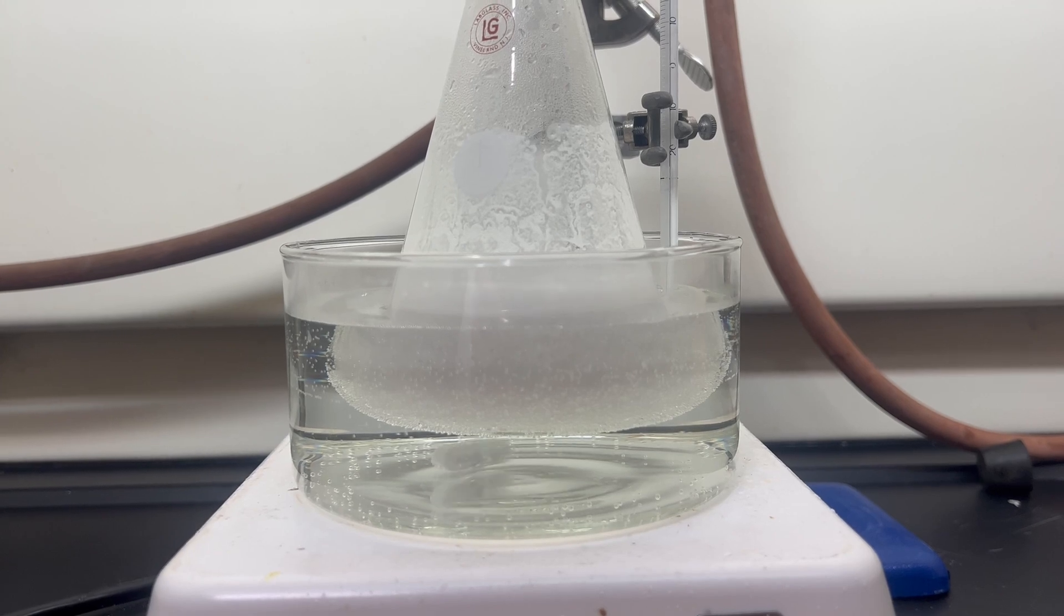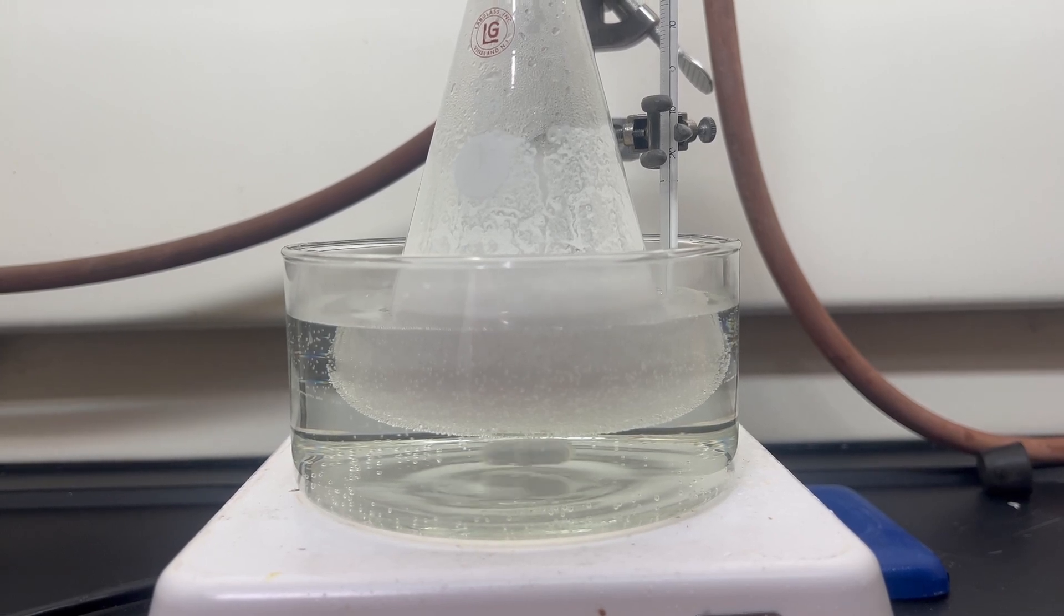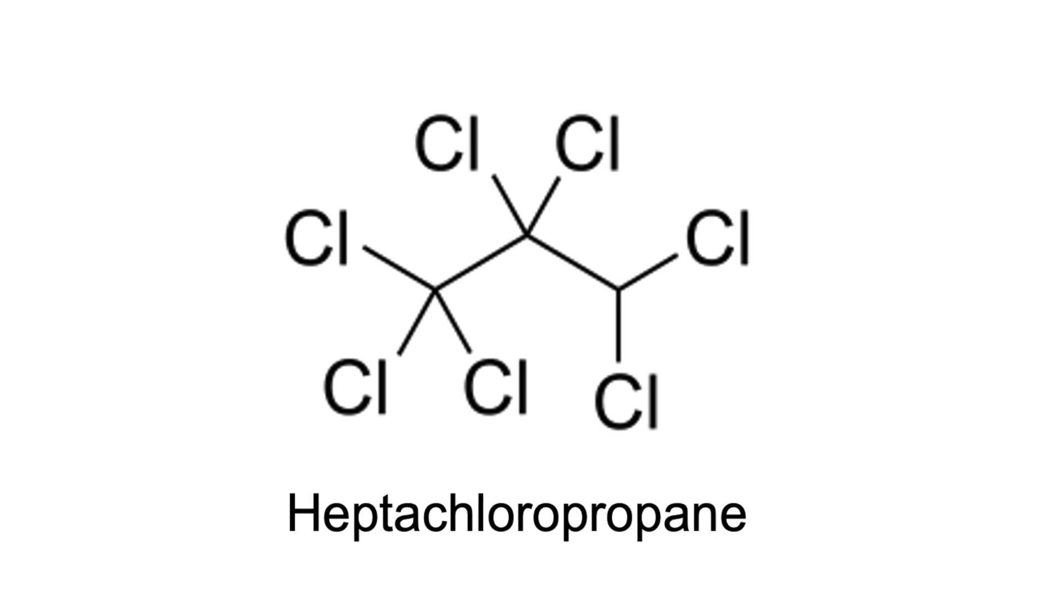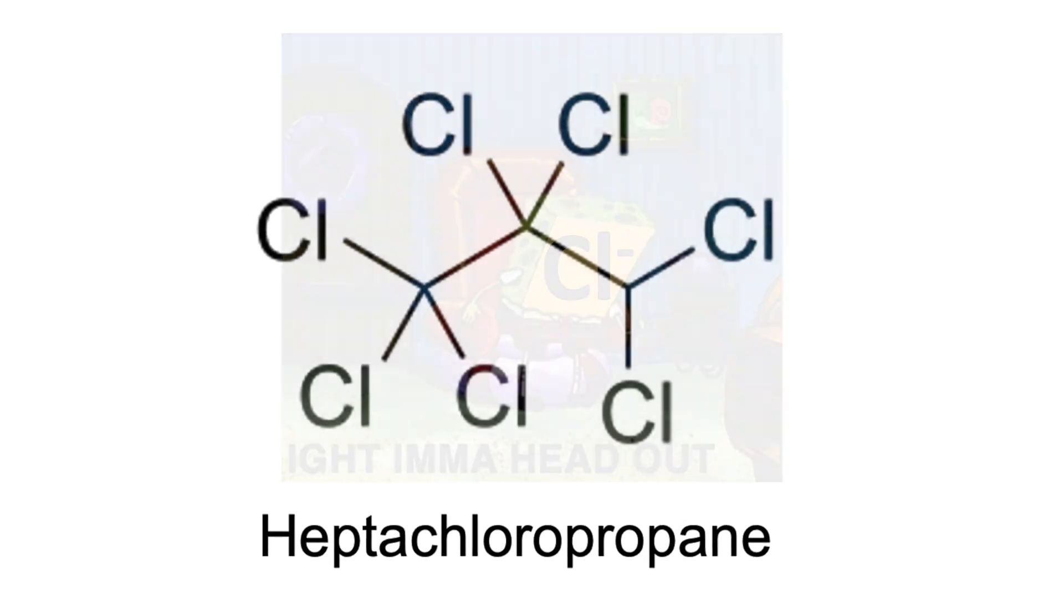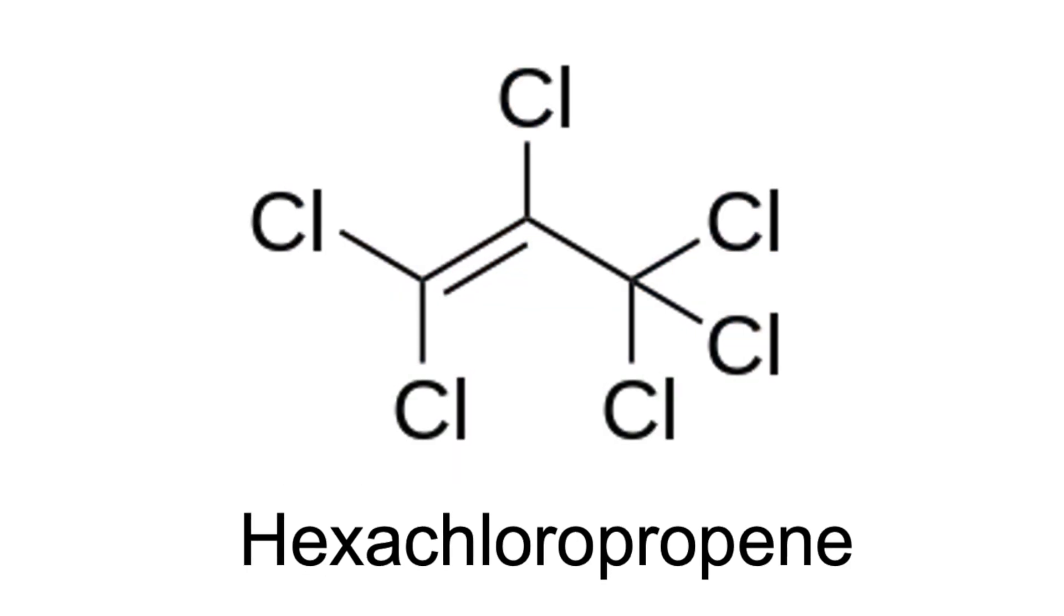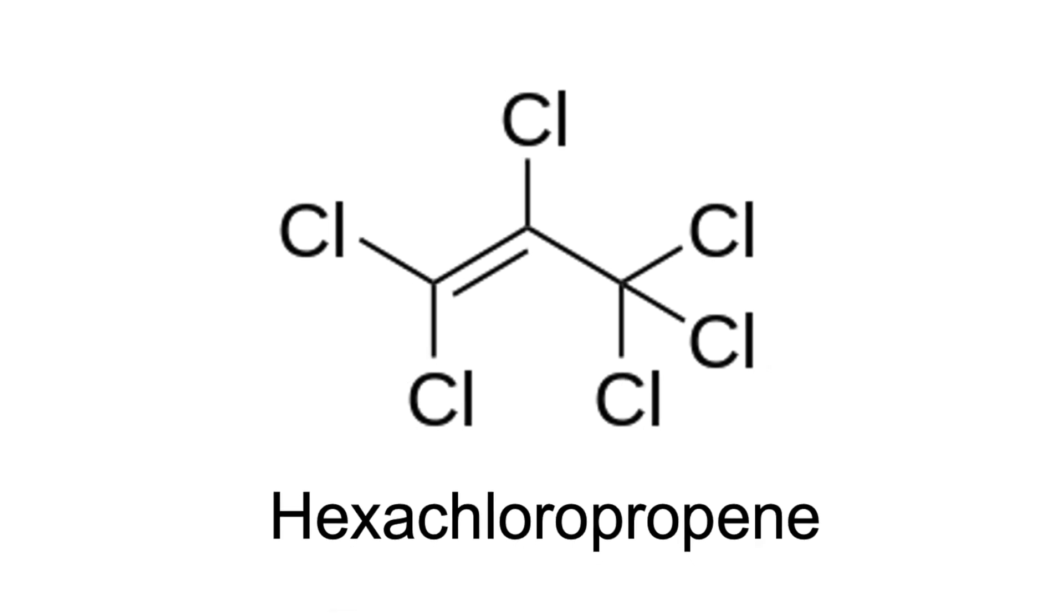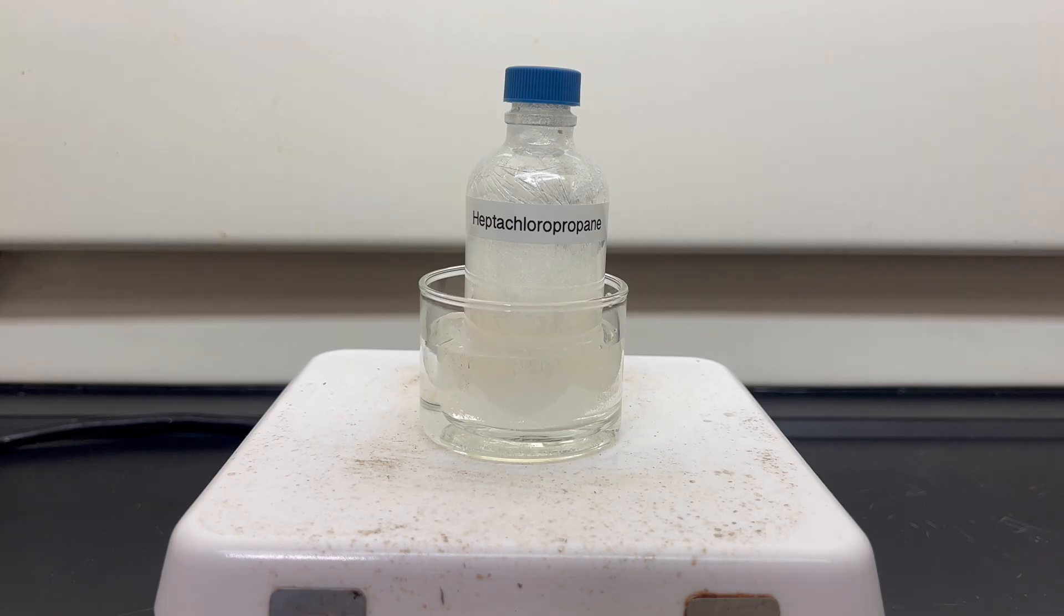The reaction is an elimination reaction known as E2, a fundamental organic reaction. In the reaction, chlorine is kicked off and a new double bond is formed. To accomplish this, we will use a strong base to remove a hydrogen group from the polychlorinated aliphatic hydrocarbon. In this case, our previously produced heptachloropropane.